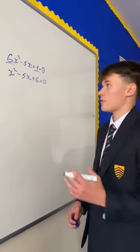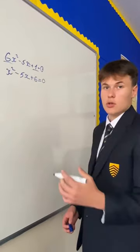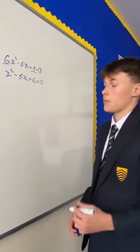Next we factorize this equation to get (x - 2)(x - 3) = 0.